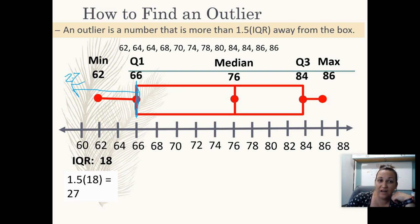If there are any numbers in the data set that are further than that, those would be an outlier. So I started at the 66 and I went to the left 27 spaces. And if I still have numbers in my data, then those are outliers. You can calculate this: you do 66 minus 27, which is 39.